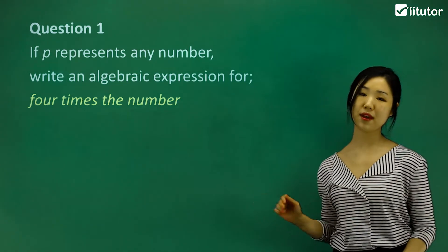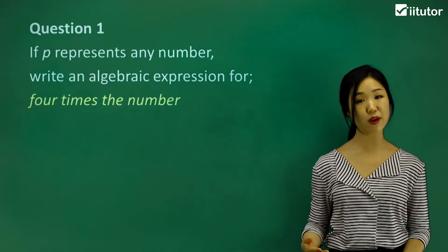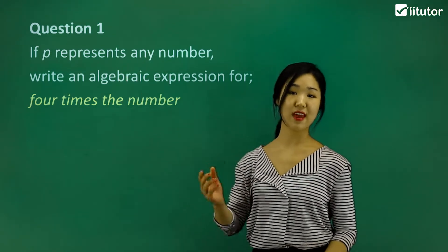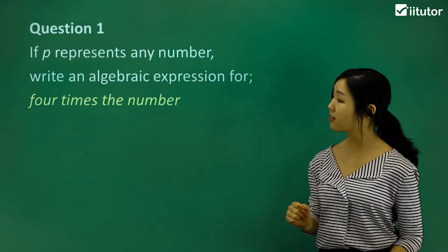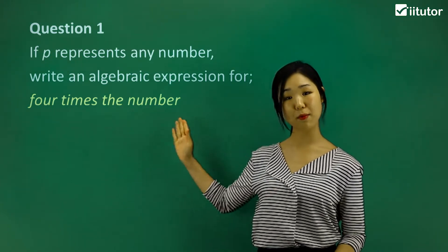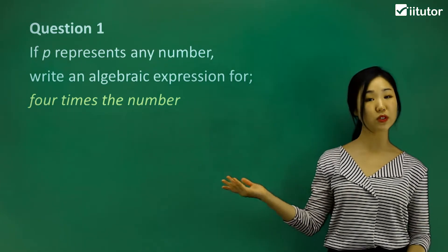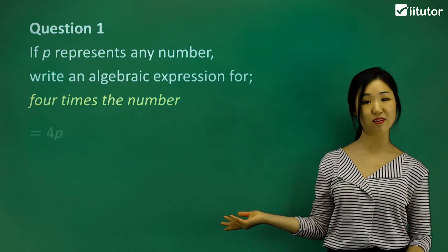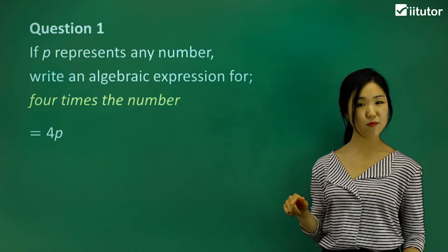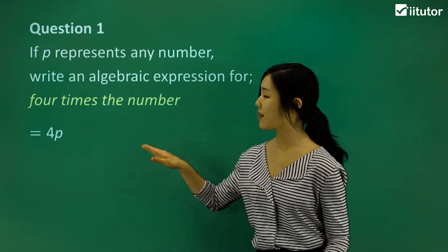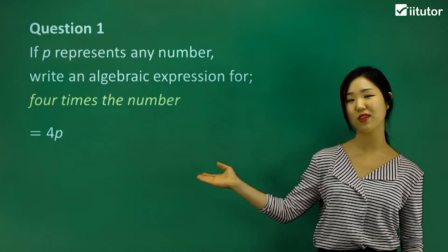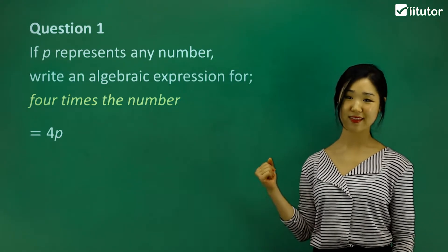Four times the number is what we want to change into its algebraic form. It tells us that p represents any number, so p would be the number. If it's four times that particular number, it would be four times p, which we can just say is 4p. We don't really like to put the multiplication sign in between, because when there's nothing in between it simply means multiply, so we keep it in its simplest form.